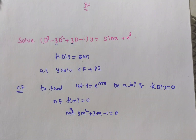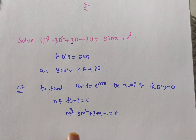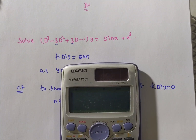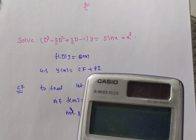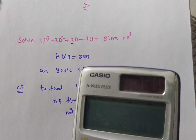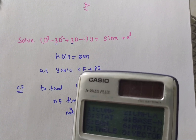We can find the roots using a calculator. You can verify whether 1 is a root or use any method. Since we have an m³ term, go to equation mode and press 5. In the equation mode, select the cubic equation: ax³ + bx² + cx + d, and press 4.